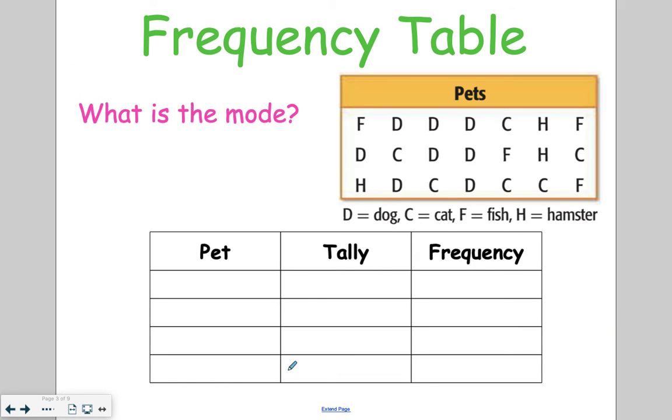Not all intervals are going to be number-based. So in this case, the intervals or the groups that we're looking at are the different types of pets. So we would have dog as the first interval, cat as the second, fish as the third, and hamster as the fourth.